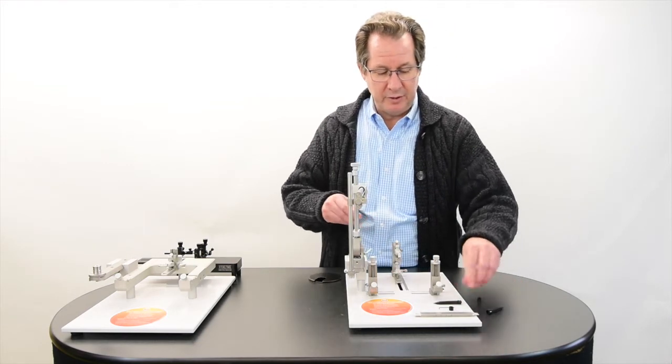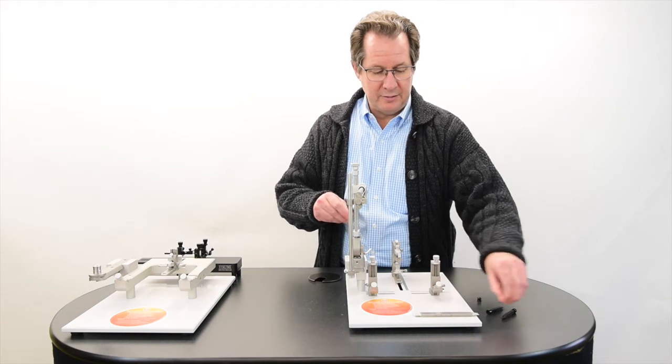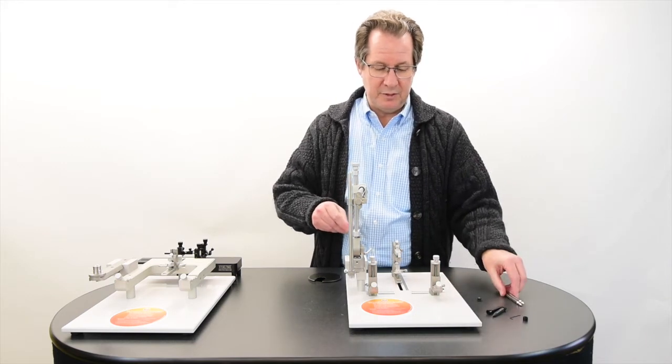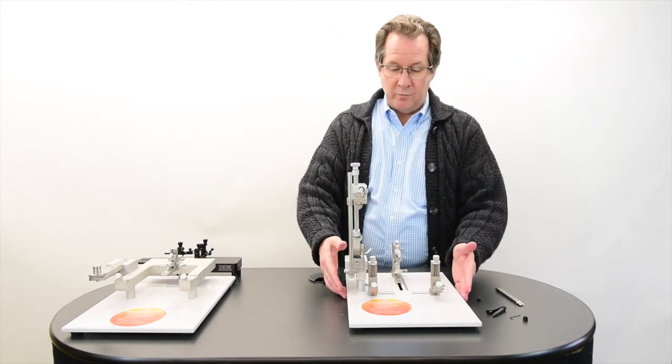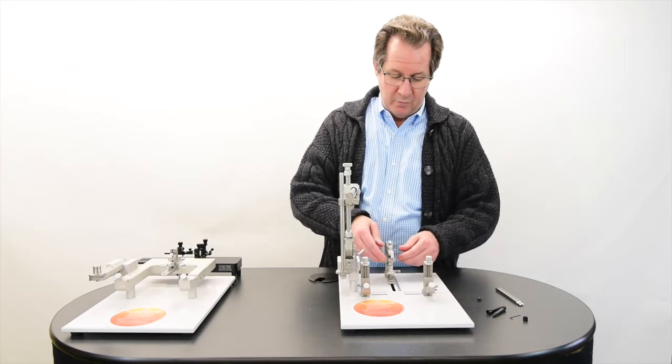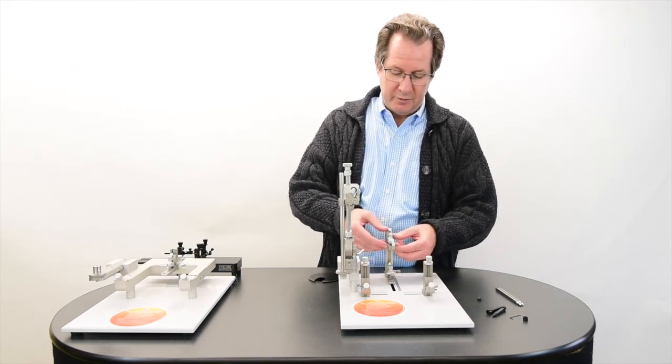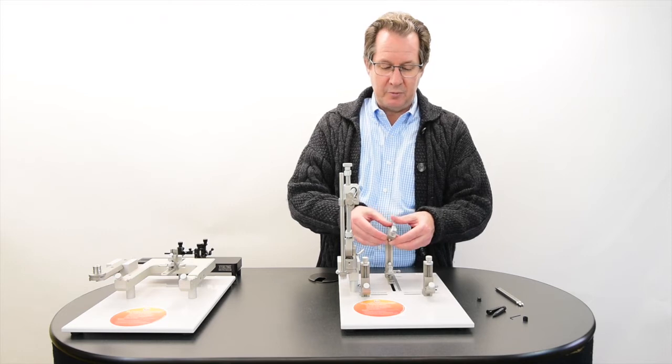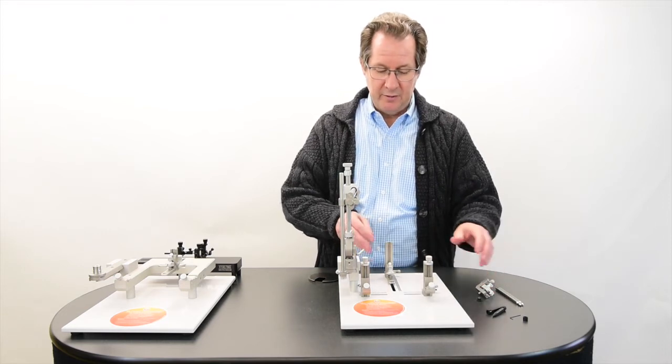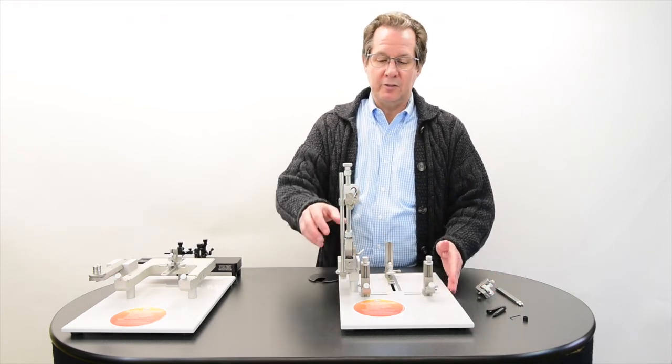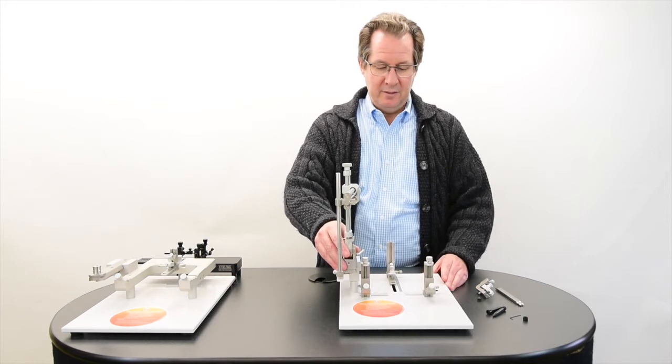Now I just want to briefly give you a little introduction as to the function of this particular unit. So right now we have it set up for rat. I'm going to remove one of the adapters. This is the mouse adapter part. Set that aside for now, and this would be the configuration for a rat. And you will notice that I have the vertical posts all the way to the side.